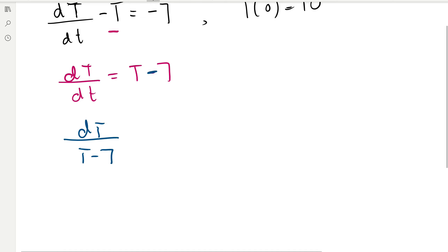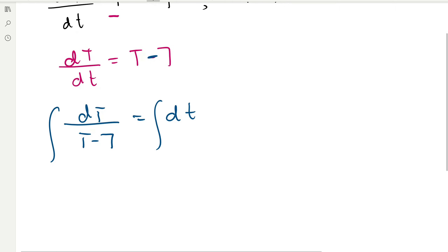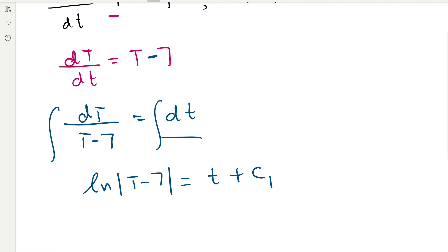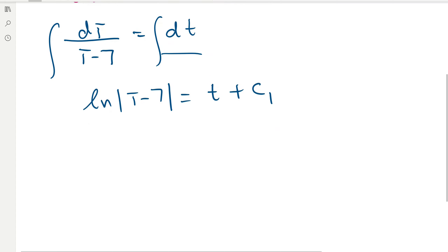The correct separation is to move (T − 7) to the left-hand side, leaving just dt on the right-hand side. Now we integrate: integrating 1/(T − 7) with respect to T gives ln|T − 7|, and integrating 1 with respect to t gives t plus the arbitrary constant c₁.